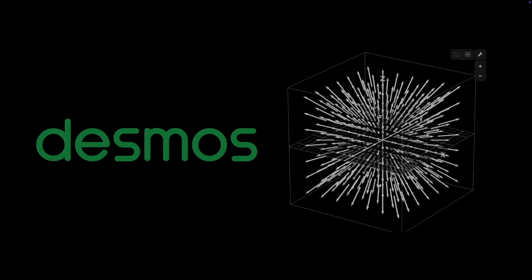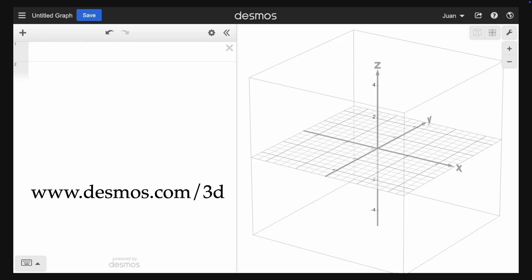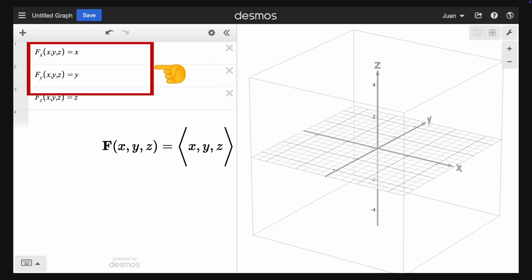Another tool that I like to use now is Desmos. Here we're going to use the 3D calculator. So to open it, just go to desmos.com/3D. Again, we are going to explore the simplest vector field.